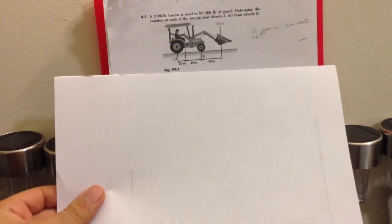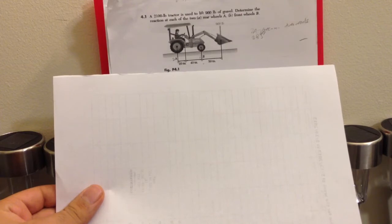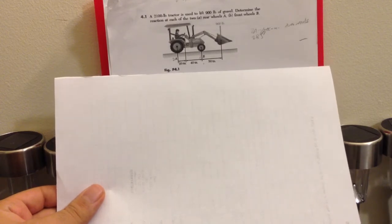Hello guys, welcome to my channel. Today I'm going to solve with you a problem in chapter 4, which is problem 4.1. Let's get started. As you can see, a 2100 LB tractor is used to lift 900 LB of gravel.